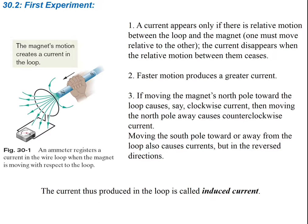We're going to first look at two experiments. In the first experiment, we're going to take a magnet and run it through a coil of wire that is connected to an ammeter. The magnet's motion is going to create a current in the loop. The current appears only if there is relative motion between the loop and the magnet — one must move relative to the other. The current disappears when the relative motion between them ceases, and faster motion produces a greater current.